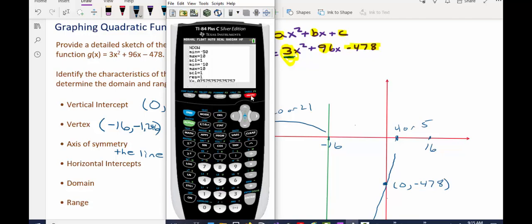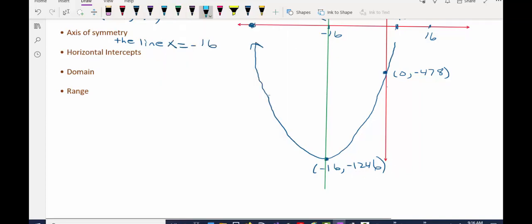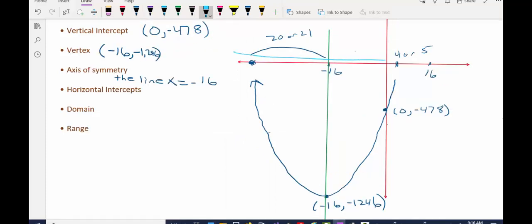What this should do when I press graph is show me the other horizontal intercept. Now I'm looking for a u-shaped graph, and the reason I'm not seeing the bottom of the u-shaped graph is remember that the vertex is as low as negative 1,246. So I want my window to contain that. Right now, my window has a y-max of 10 and a y-min of negative 10.